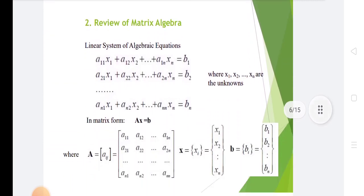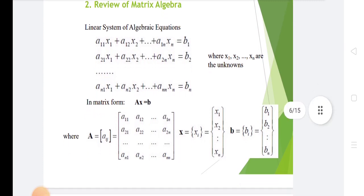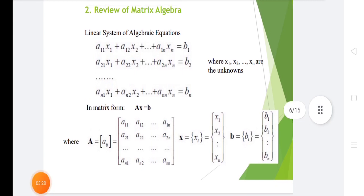In review of matrix algebra, there is linear system of algebraic equations given: A11x1 plus A12x2 dot dot A1nxn equals B1. In matrix form, Ax equals B, where A is the matrix of coefficients A11, A12 dot dot A1n. x equals x1, x2, xn. B equals B1, B2, Bn.